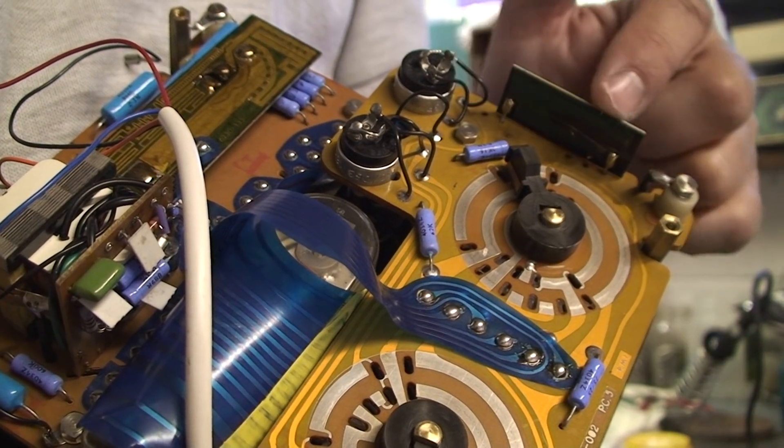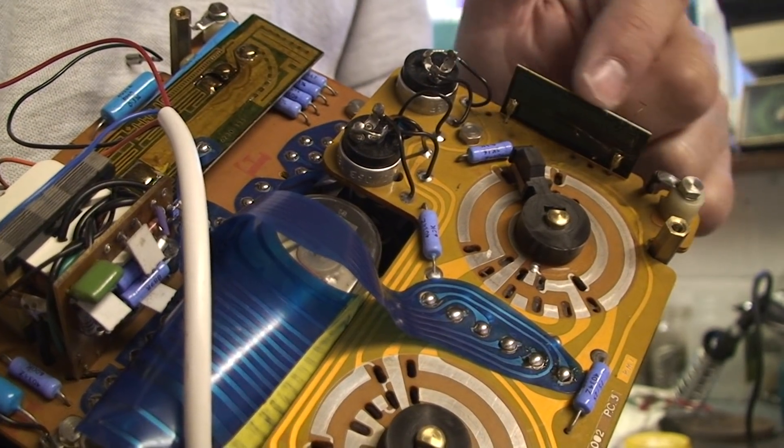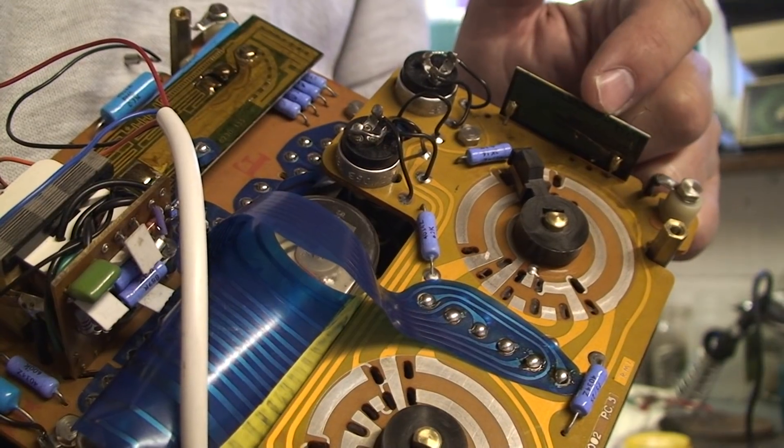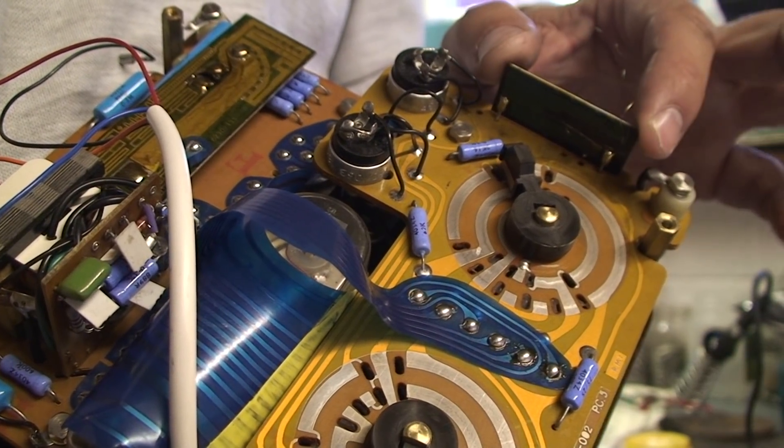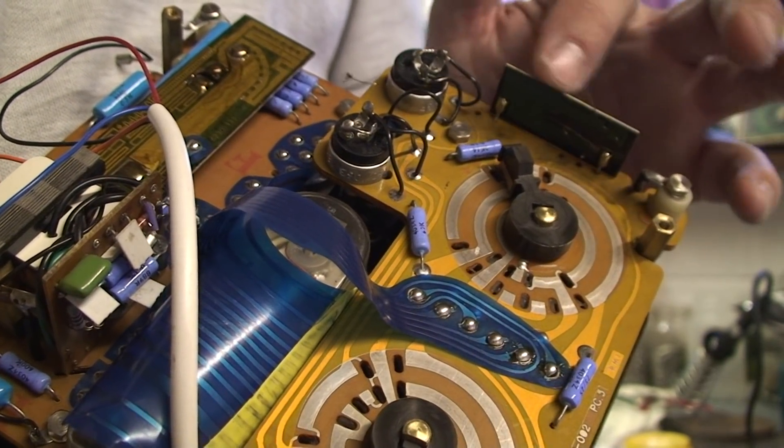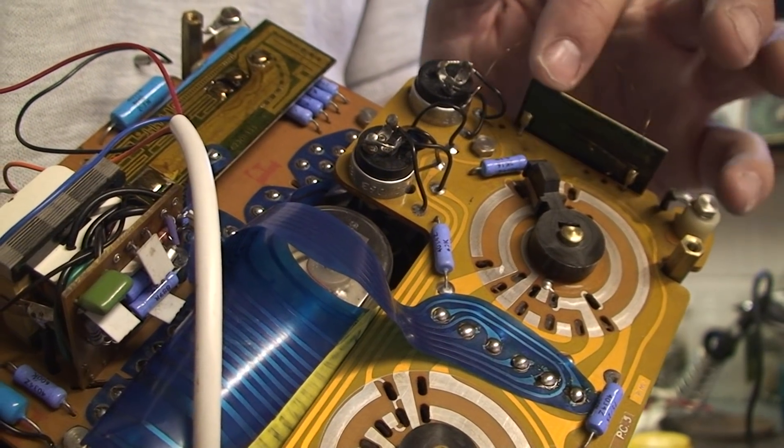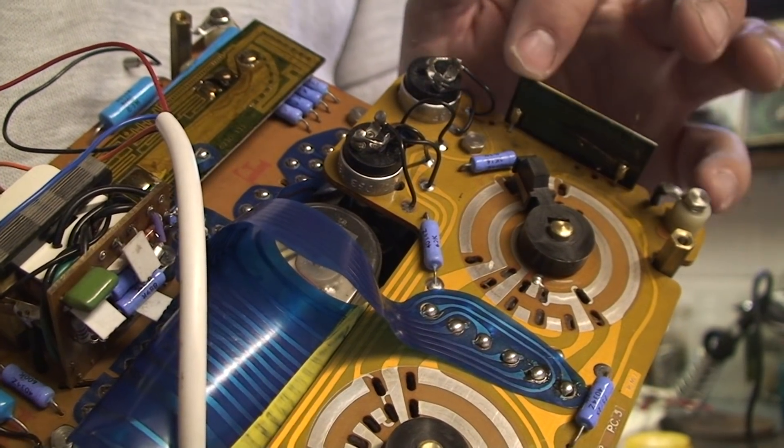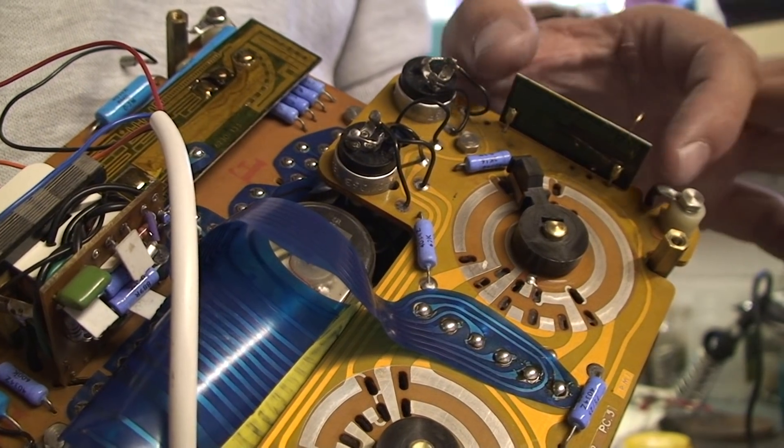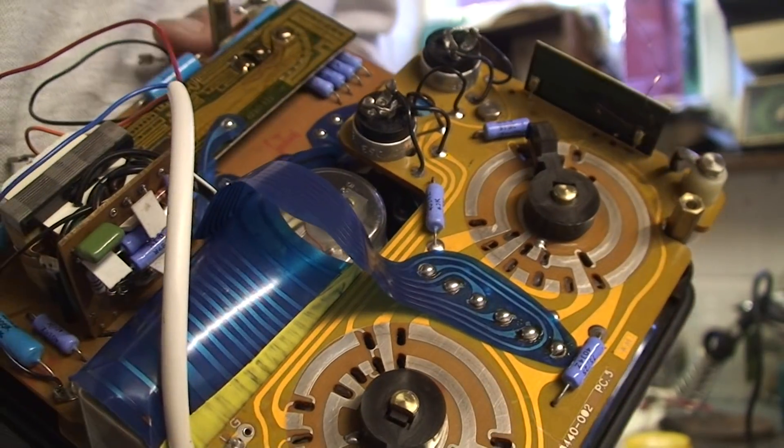And this R1 resistor is 18.4 ohms. What I'm going to do is I'm going to use a piece of circuit board and make up my own resistor, put it in here, and then we're going to see what happens.